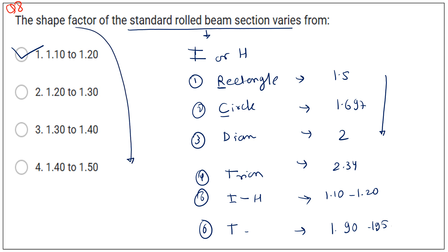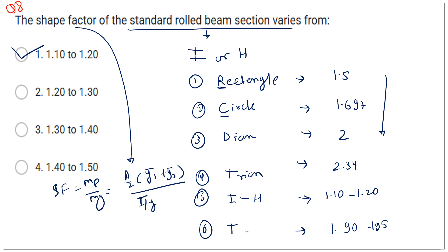The shape factor formula is M_P / M_Y, which can also be expressed as (A/2)(Ȳ₁ + Ȳ₂) divided by I/Y_max, where I/Y_max is nothing but the section modulus. This is how you can connect information across questions.